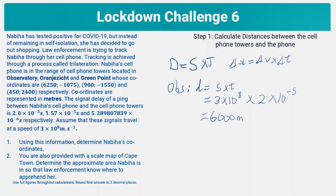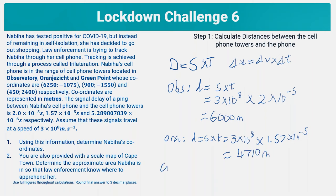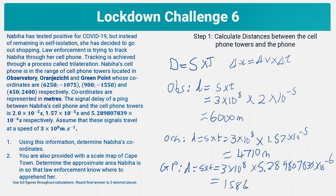For Urania Zest, distance equals speed times time: three times 10 to the eight, multiplied by 1.57 times 10 to the negative five seconds, gives us 4,710 meters. For Greenpoint, the same calculation — three times 10 to the eight times 5.289807839 times 10 to the negative six seconds — gives us 1,586.942352 meters. We have to use this full figure because we've been asked to use full figures throughout our calculations.